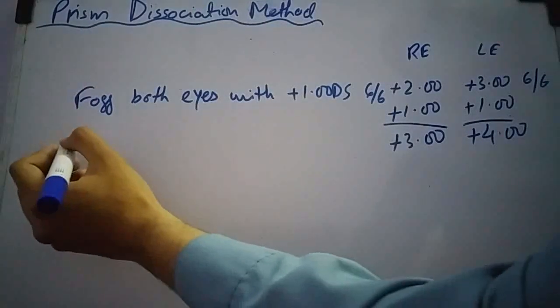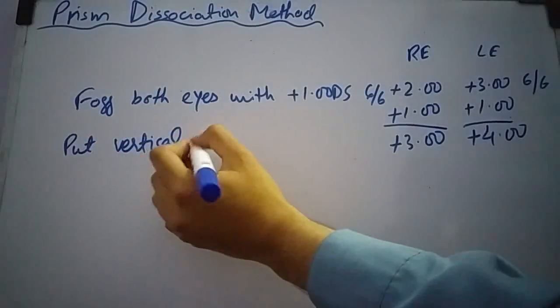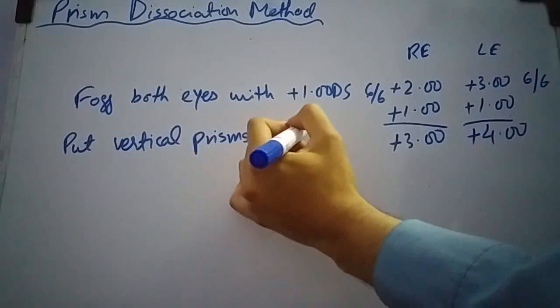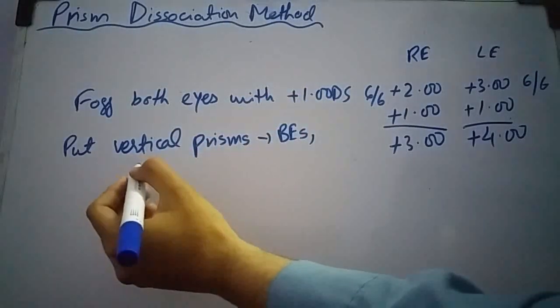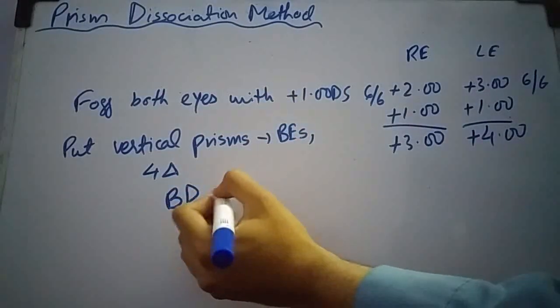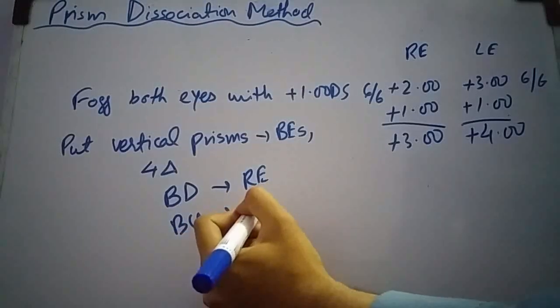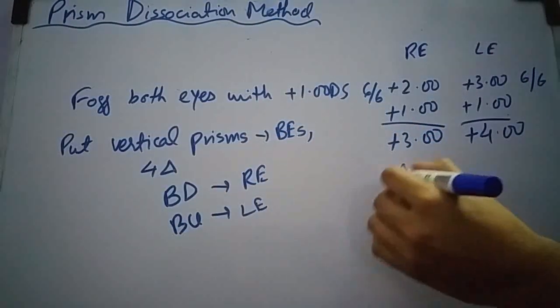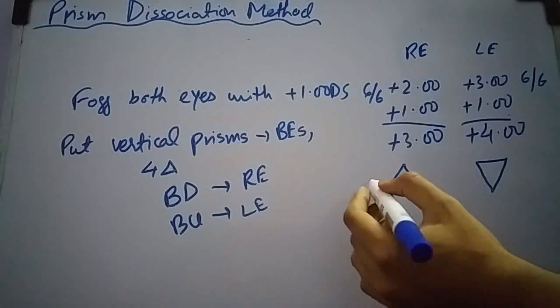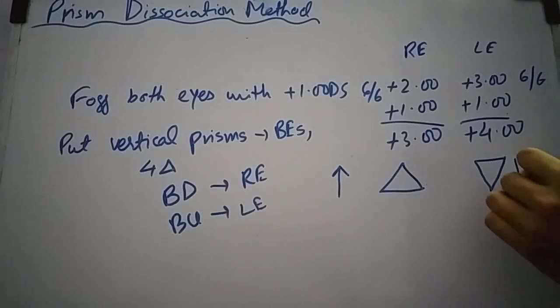Now put vertical prisms in front of both eyes. The usual power is four prism diopter. Base down in front of right eye and base up in front of left eye like that. This prism will shift the image of object in upward direction and this prism will shift image of object in downward direction.